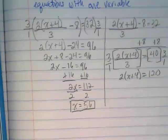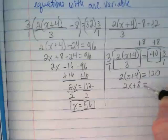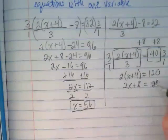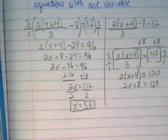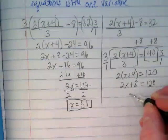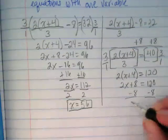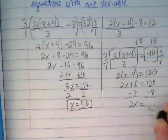What do you guys think is next? Distribute. So we get 2x plus 8 equals 120. We want to subtract the 8 because we're combining like terms across the equal sign. We get 2x is equal to...